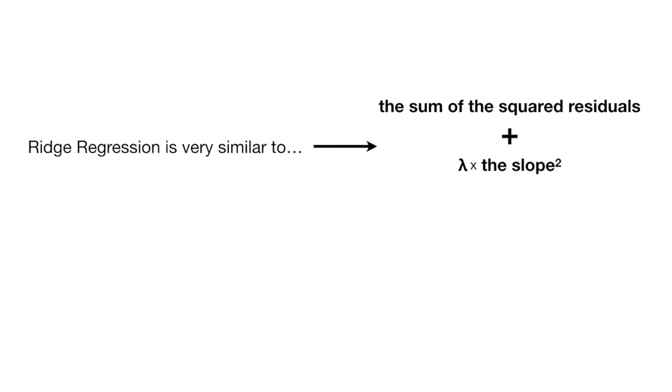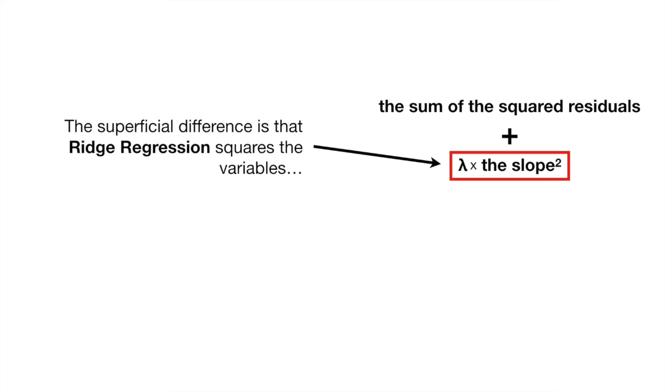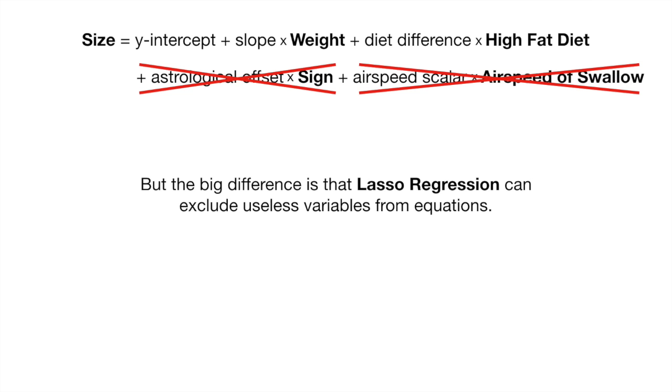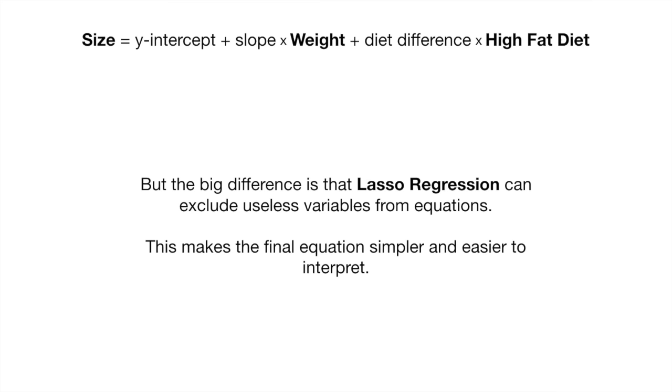In summary, Ridge Regression is very similar to Lasso Regression. And the superficial difference is that Ridge Regression squares the variables, and Lasso Regression takes the absolute value. But the big difference is that Lasso Regression can exclude useless variables from equations. This makes the final equation simpler and easier to interpret. Hooray!